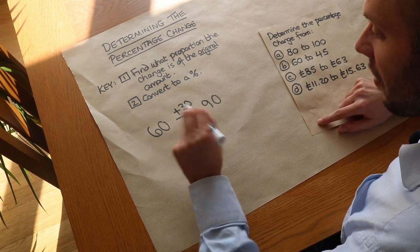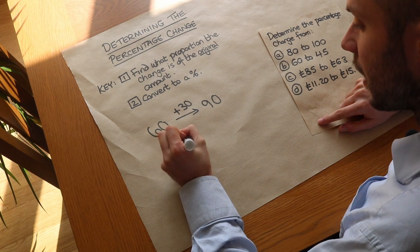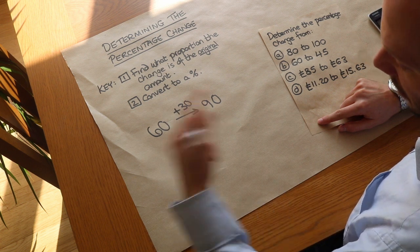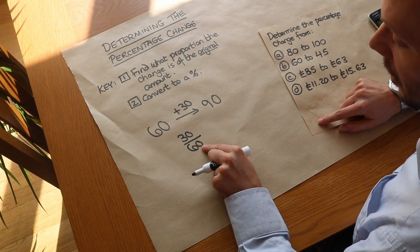So we show the calculation for that. We're doing the change of 30 as a proportion of the original. So we can see 30 over 60, that's just half. And then how do we convert it to a percentage?